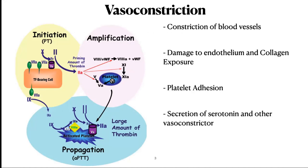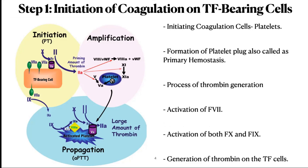The activated platelets secrete serotonin and other vasoconstrictive substances, which causes constriction of blood vessels. This adherence of platelets to the collagen is accelerated by von Willebrand factor. When the vessel is disrupted, platelets escape from the vessels, bind to collagen and other extracellular matrix components at the site of injury, and are partially activated.